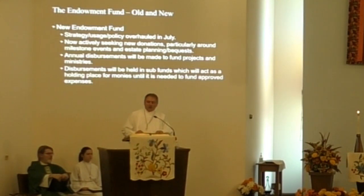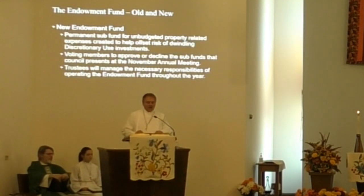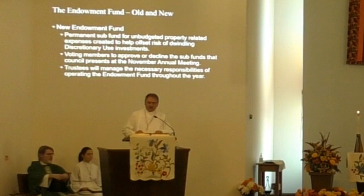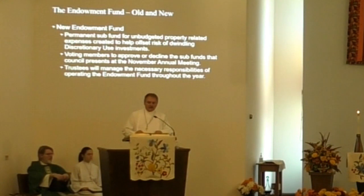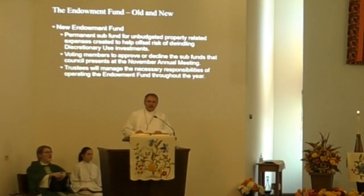This disbursement will be directed to one or more sub-funds that will act as holding places for money until it is needed to fund approved expenses. A permanent sub-fund for unbudgeted property-related expenses has been created to help offset the risk of the limited remaining monies in the discretionary use investments previously discussed. Voting members of this congregation will play a key role, being asked to approve or decline the sub-funds that council presents at the November annual meeting. A new group of individuals called trustees has been created and will manage the necessary responsibilities of operating the endowment fund throughout the year.